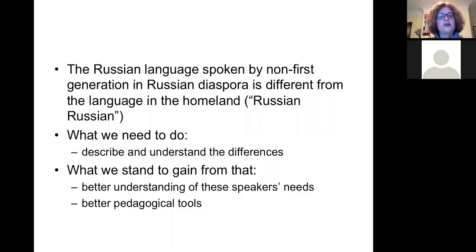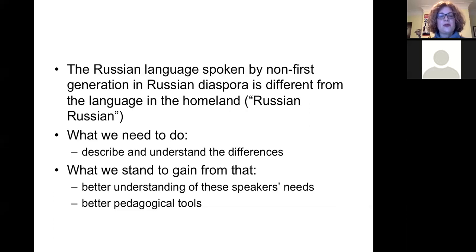I'm avoiding the term 'standard Russian,' because standard Russian is something that's fossilized and is usually about 50 years behind the language that's actually spoken in the homeland. So even if we assume that there are differences between the standard language in textbooks and the language that people hear in the streets in Moscow or Sverdlovsk or any other city, we know that the Russian language spoken by diasporic populations is different from the language of the homeland.